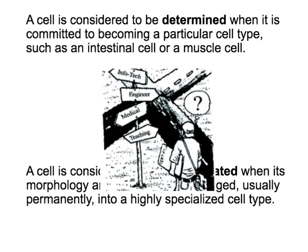So distinguishing a cell that is determined from one that is differentiated: a cell that is determined is one that is committed to a particular cell type but its shape hasn't changed, while a cell that is differentiated has a different morphology and is becoming a more specialized cell.